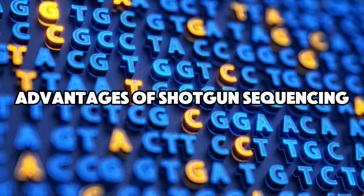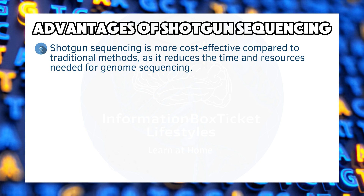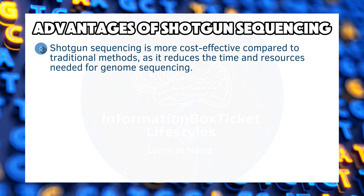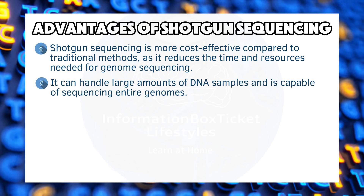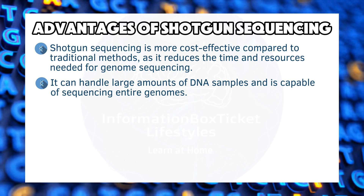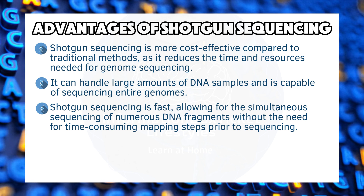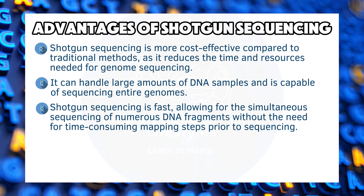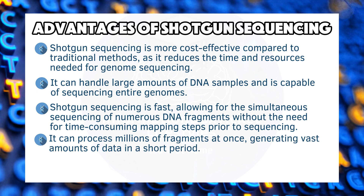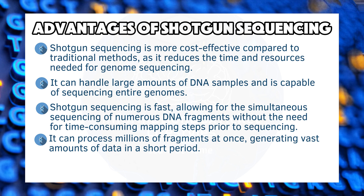Advantages of shotgun sequencing: Shotgun sequencing is more cost-effective compared to traditional methods, as it reduces the time and resources needed for genome sequencing. It can handle large amounts of DNA samples and is capable of sequencing entire genomes. Shotgun sequencing is fast, allowing for the simultaneous sequencing of numerous DNA fragments without the need for time-consuming mapping steps prior to sequencing. It can process millions of fragments at once, generating vast amounts of data in a short period.